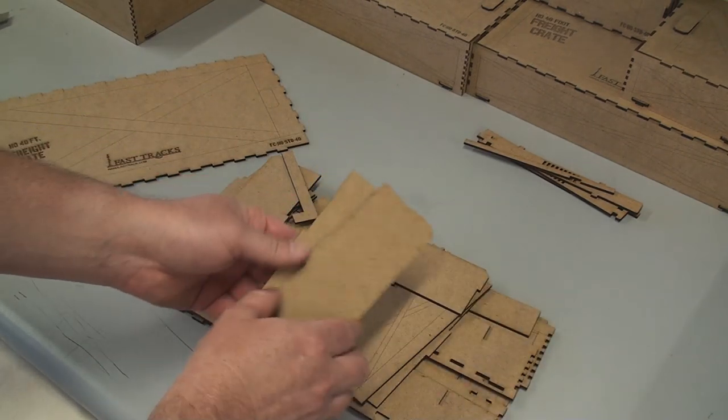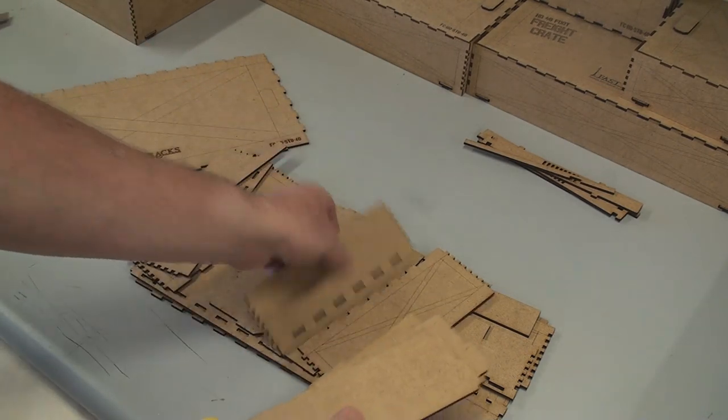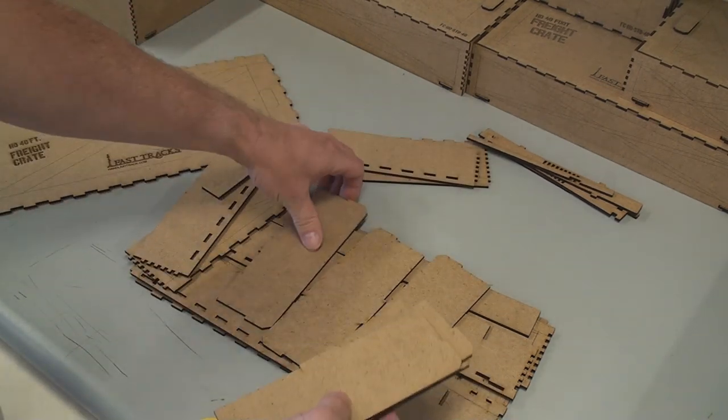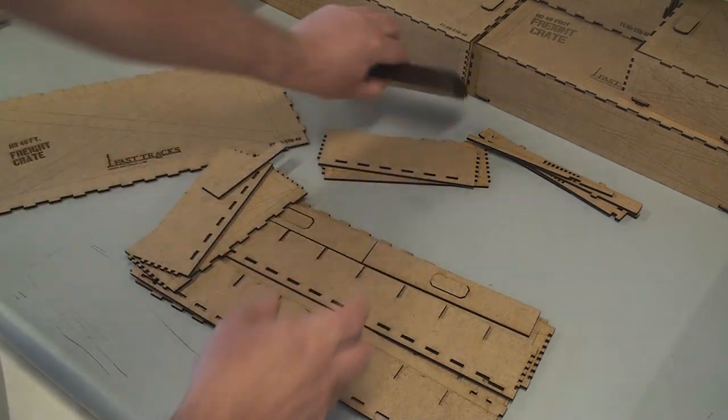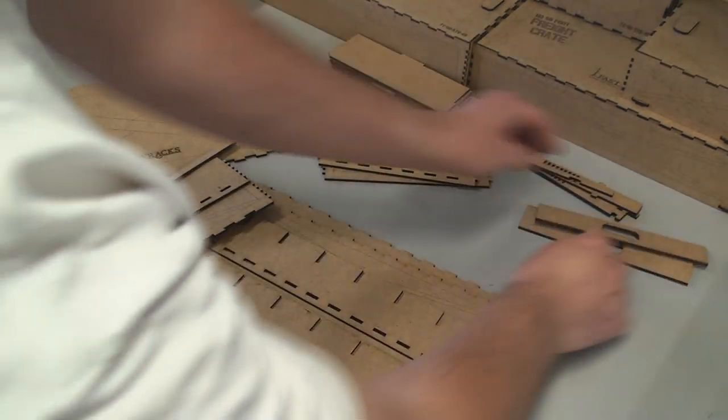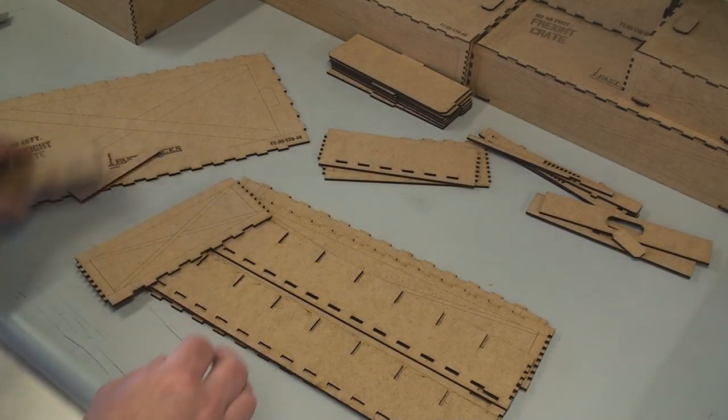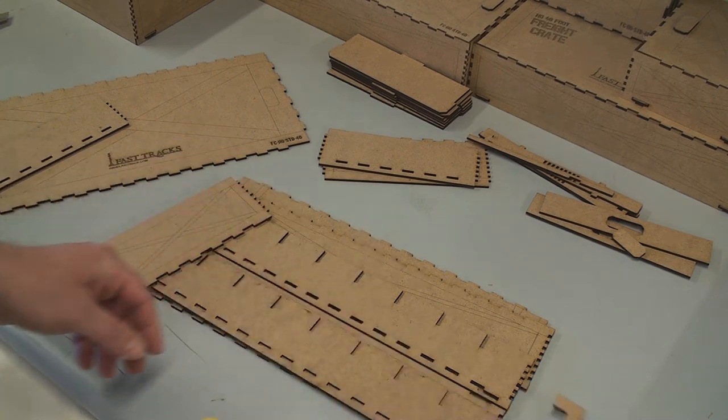These are all the dividers. Depending on the scale freight crate box you're using, there could be eight or twelve of these. I'm just going to set those aside. Again, we don't need those until the end of the build. More parts for the key locks.